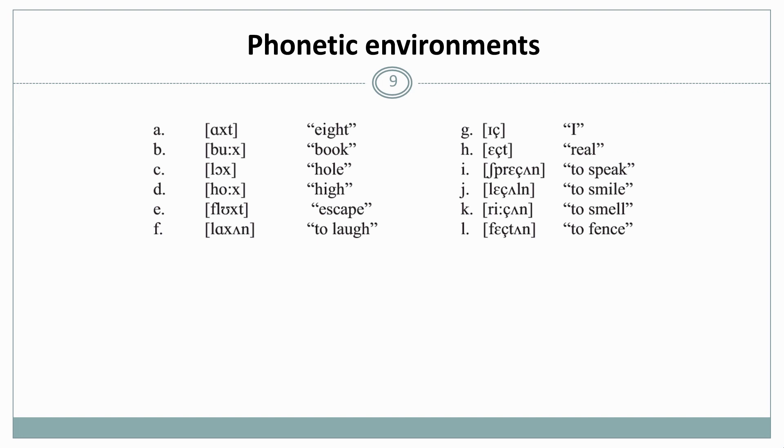Let's have a final example of a phonetic environment so you really get the idea. Here are a few examples from German and the two sounds we want to look at are the x and the ç. For x we have the examples acht, which means eight, buch, loch, hoch, flucht, and lachen. And for ç we have the examples ich, which means I, echt, sprechen, lächeln, riechen, and fechten.